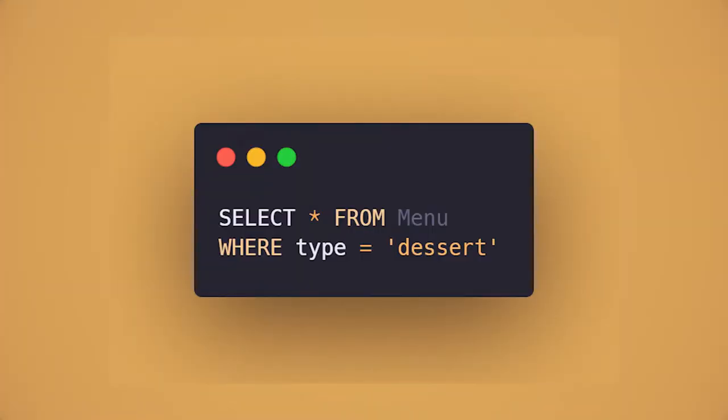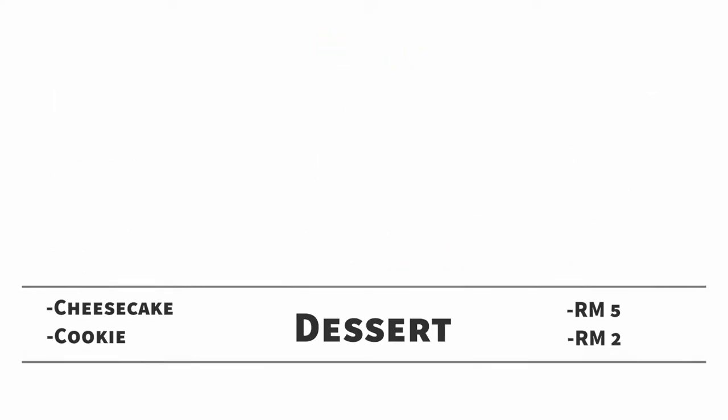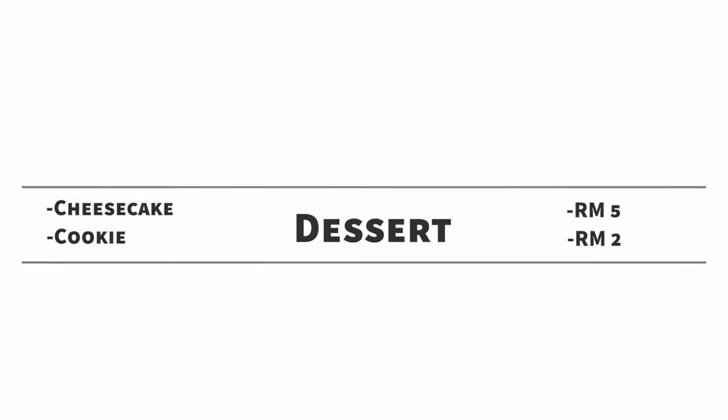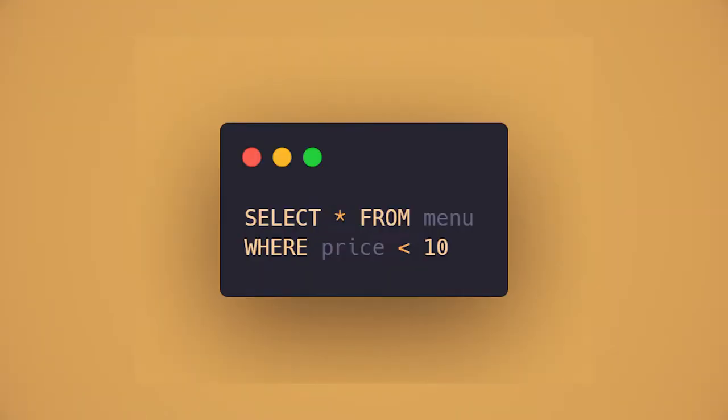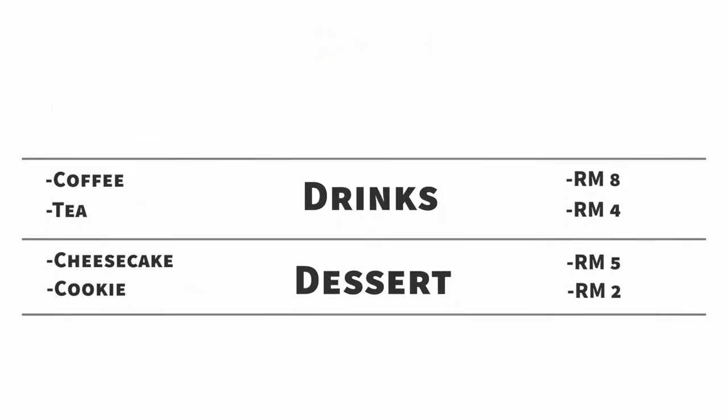If we want to retrieve all the desserts from our database, we can write a SQL query: SELECT * FROM menu WHERE type = 'dessert'. This query will retrieve all the dessert items on our menu. Or if we want to retrieve all the dishes below 10 ringgit, we write: SELECT * FROM menu WHERE price < 10. This will return all items below 10 ringgit. Pretty cool — and that is SQL, used to retrieve data from our database.